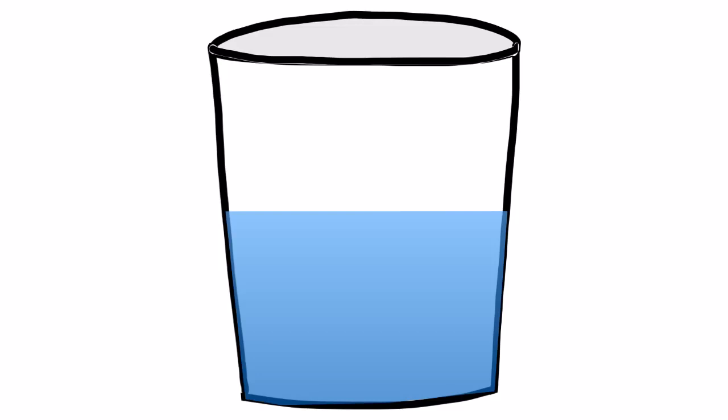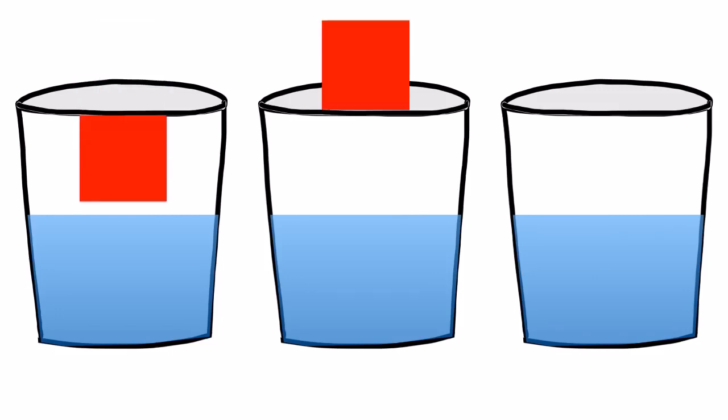The density of liquid water is one. Objects with a density of less than one will float, and objects with a density greater than one will sink. Take a look at these three objects. All of them float, so their densities are less than one.